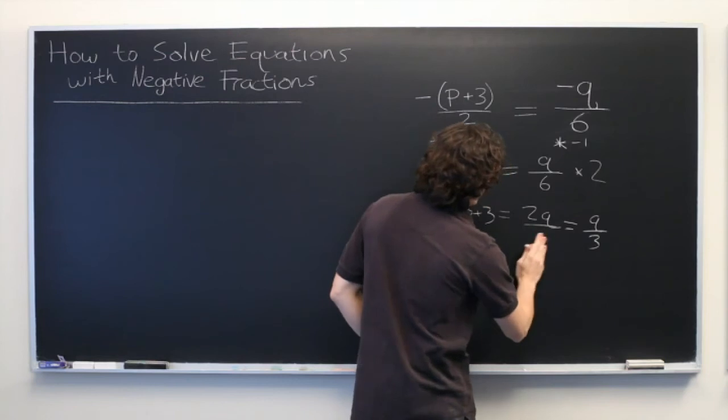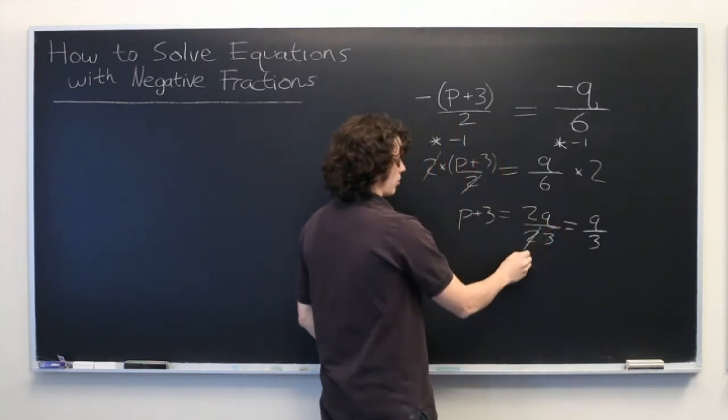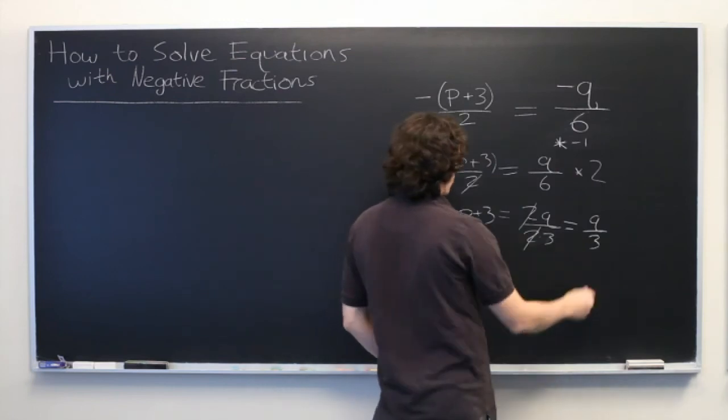In fact, we can actually write it like that if it's helpful. 2 times 3. These two's cancel and we're left with q over 3.